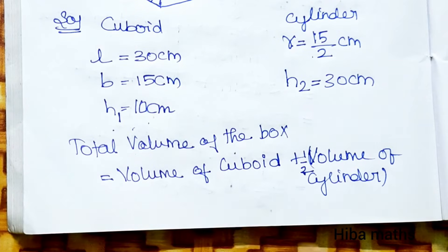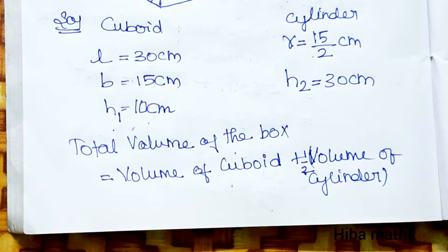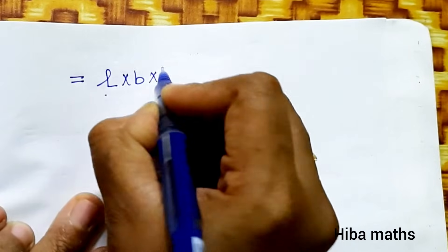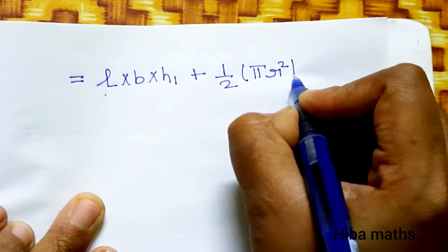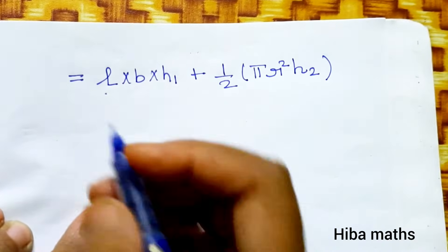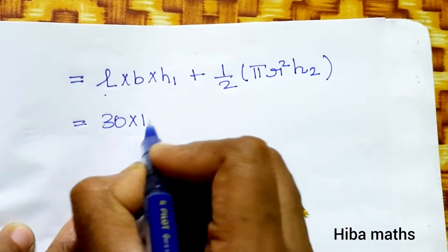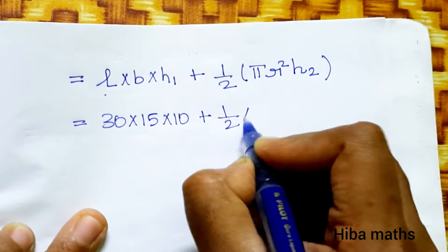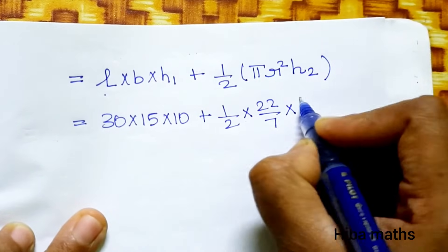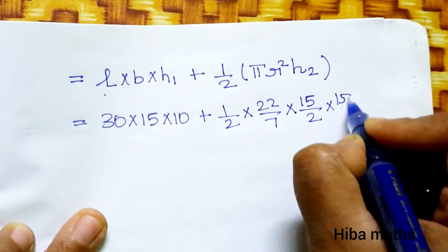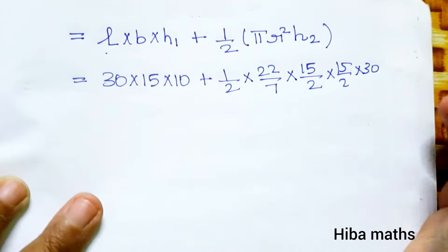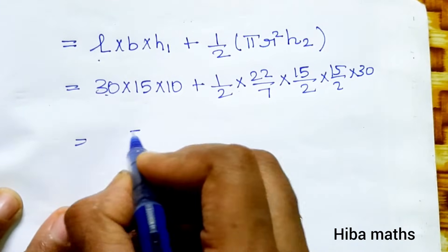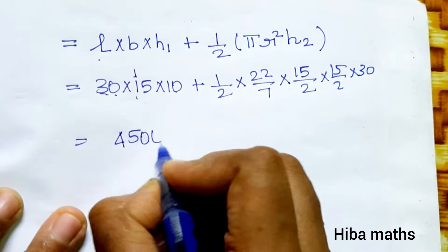The cuboid volume formula is l × b × h, and the cylinder volume formula is π r² h. So total volume = (l × b × h1) + (1/2 × π r² × h2). Substituting: (30 × 15 × 10) + (1/2 × 22/7 × (15/2)² × 30).